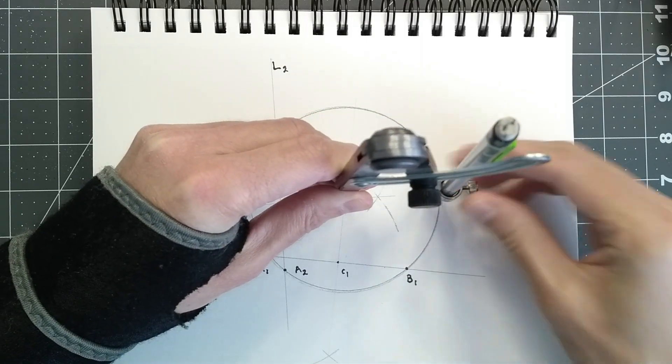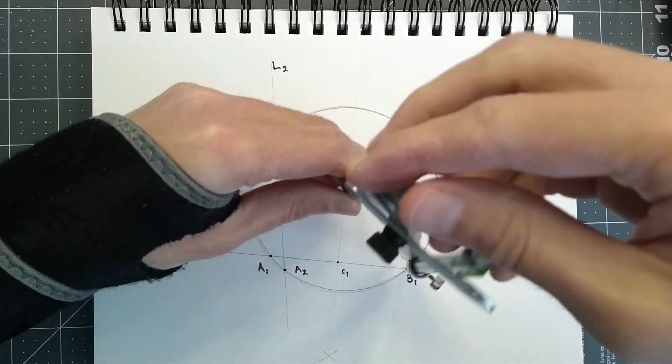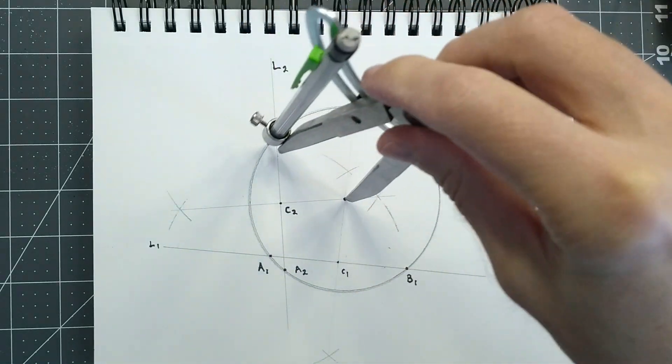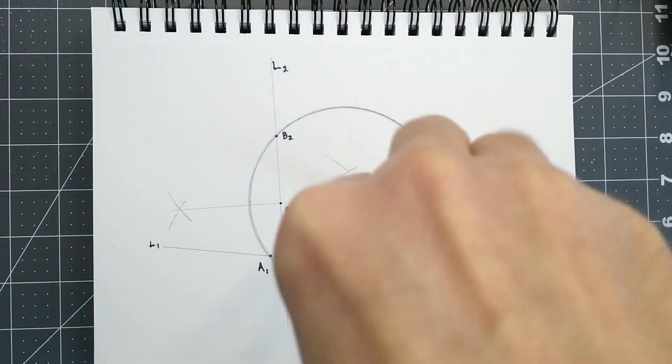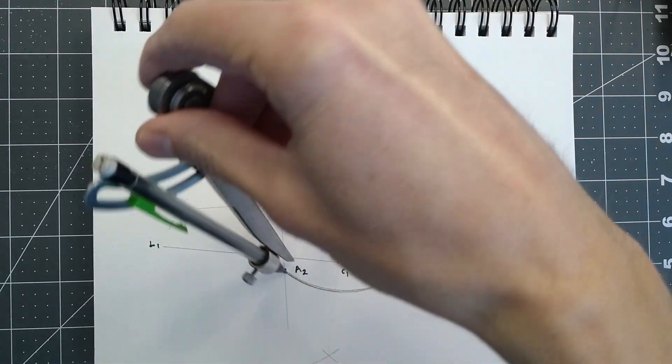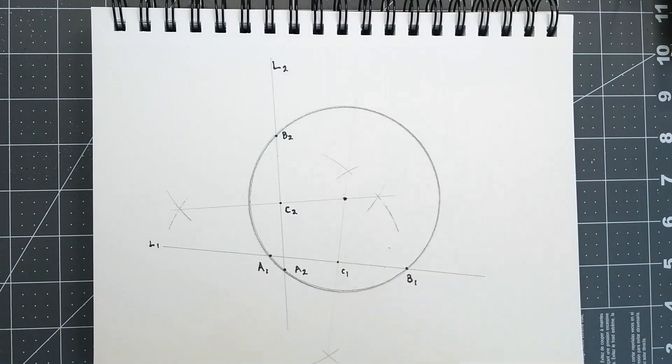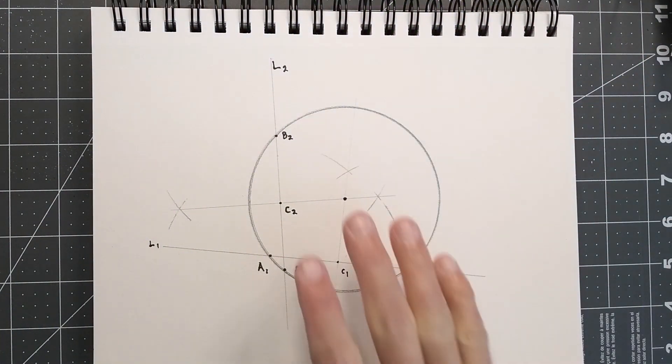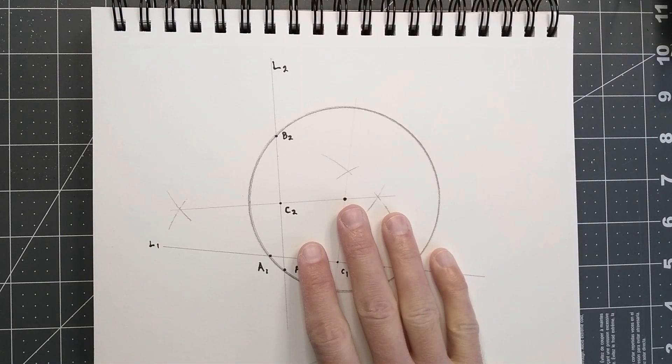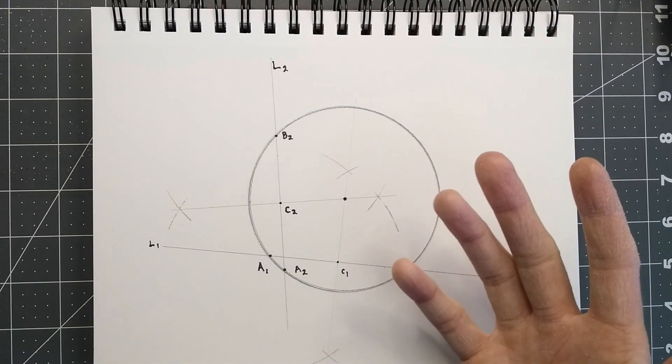So we'll place our needle on the center point. Set our width. Make it nice and dark here so everybody can see. And now you can see we're the same width all the way around. And that's how you find the center of a circle.